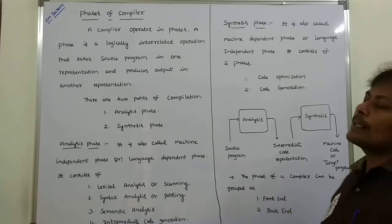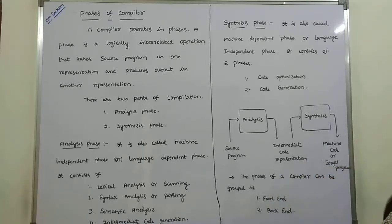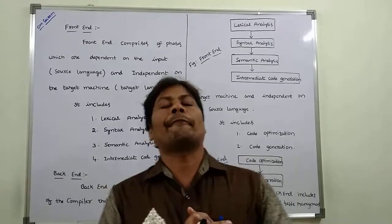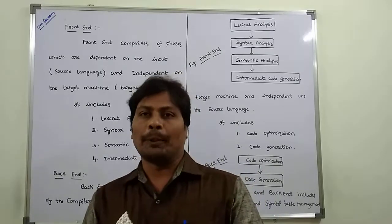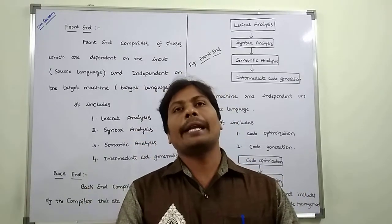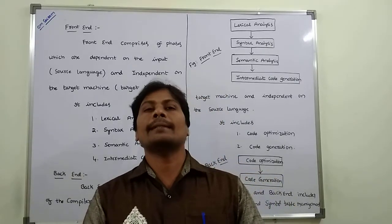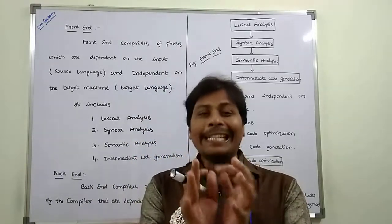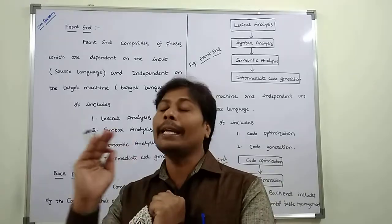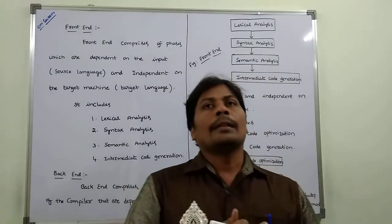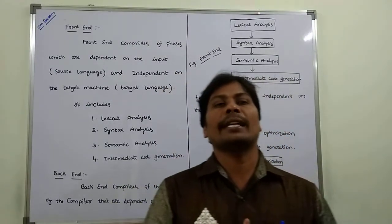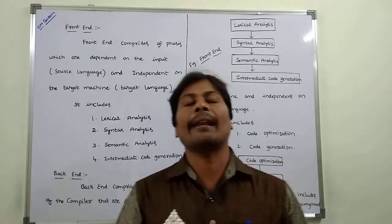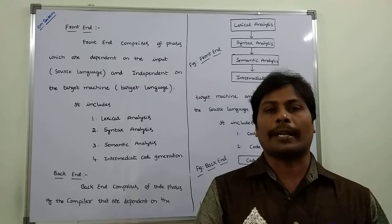The phases of the compiler can also be divided into two groups: frontend and backend. Frontend comprises those phases that are dependent on the input source language and independent of the target machine. Frontend consists of four phases: lexical analysis, syntax analysis, semantic analysis, and intermediate code generation.